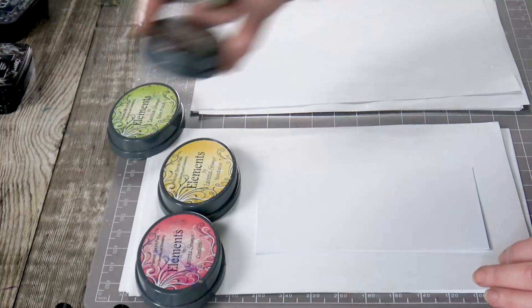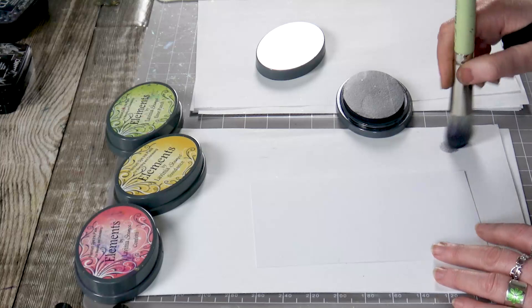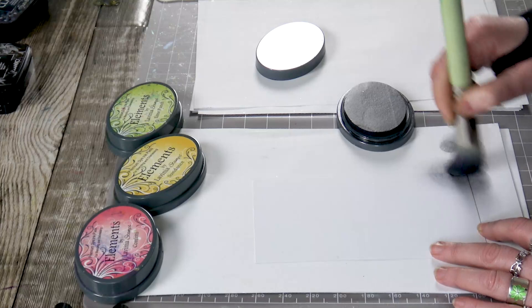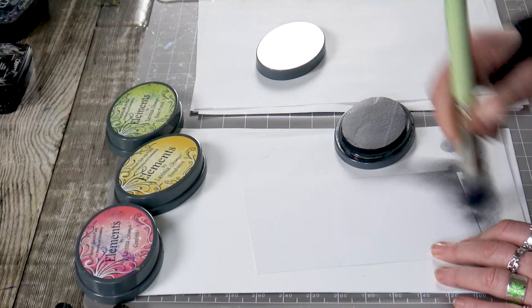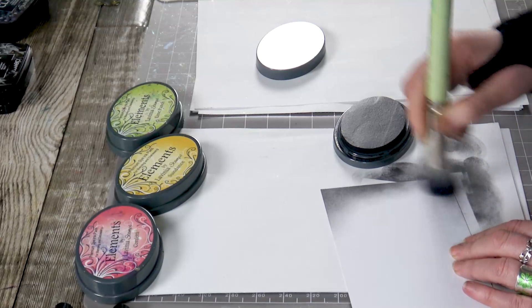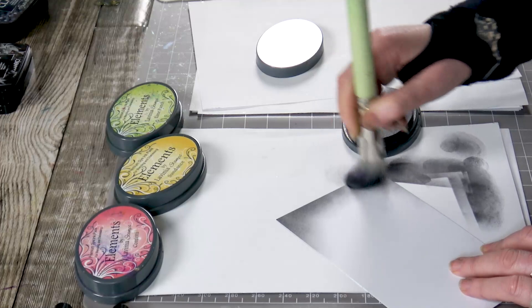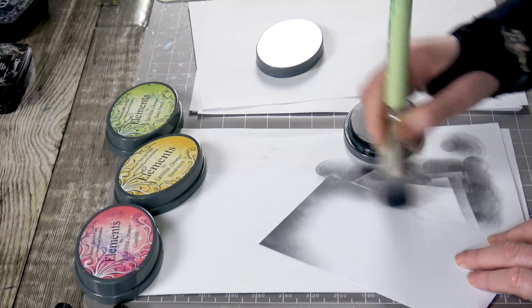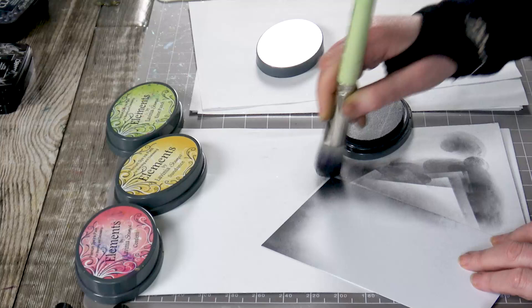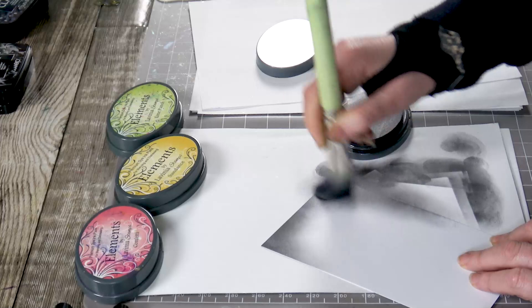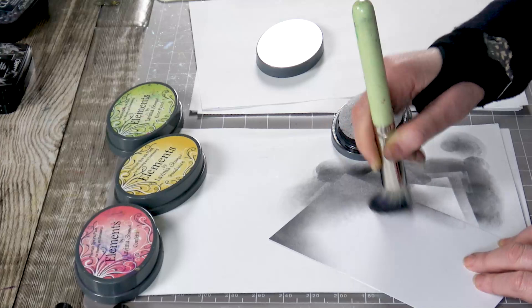So I am going to start with the graphite. I'm going to come in at the edges and just build that depth of colour all the way around. Now it's going to take a little bit of time to build this colour up. I've used this ink pad so many times so it's not quite as juicy as when I first got it, which has its benefits but on this occasion it's just going to take me a little bit more time to build up that dark background.